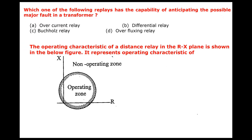Which one of the following relays has the capability of anticipating the possible major fault in the transformer? It is the relay that anticipates before the occurrence of the major fault. Buchholz relay is a relay that acts before the major fault because it detects slowly developing faults. So Buchholz relay anticipates the possible major fault in the transformer.